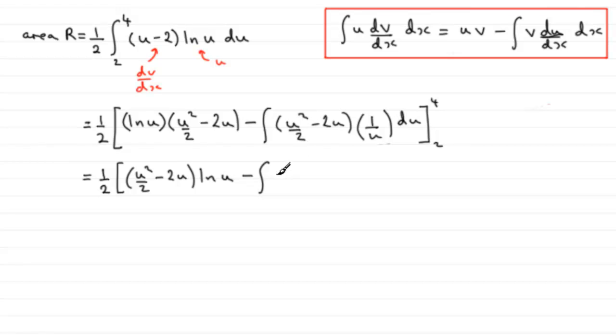So 1 over U times U squared over 2 is just going to give me U over 2, and minus 2U times 1 over U is going to leave me with minus 2. So all of that is integrated with respect to U going between 2 and 4.